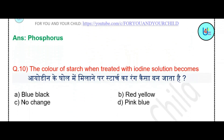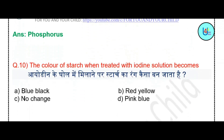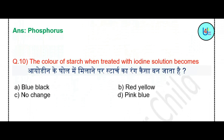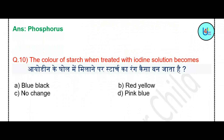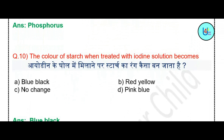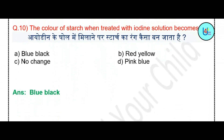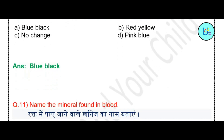Question number 10: The colour of starch when treated with iodine solution becomes — blue-black, red, yellow, no change, or pink-blue? The correct answer is blue-black.